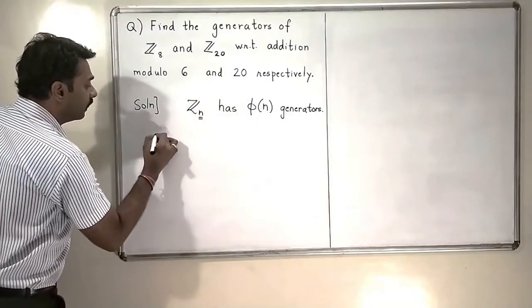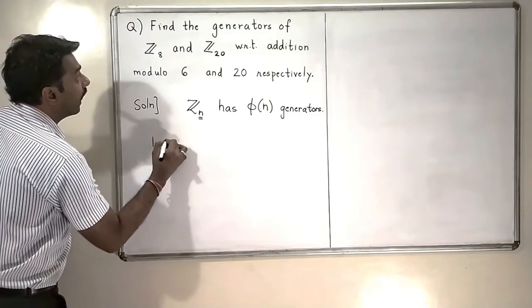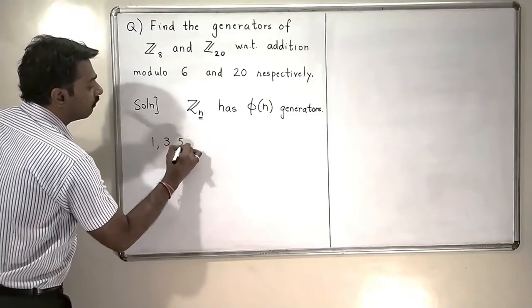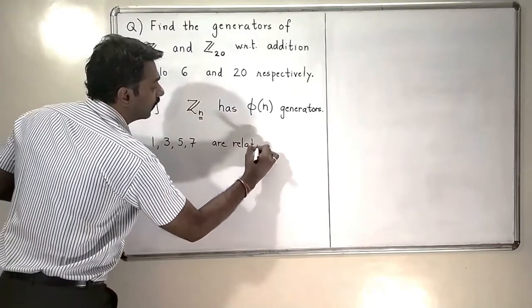What are the numbers that are relatively primed with 8? 1, then I have 3, 5 and 7 are relatively primed with 8.